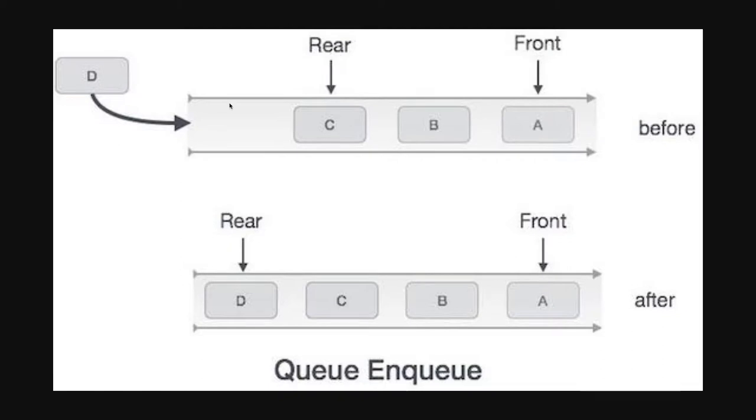If you are adding D element to this, rear will start pointing to D and now front is still at A. Now when you dequeue from this like removing the element from the front, if you dequeue A then the front will point to B and rear is still pointing to D.